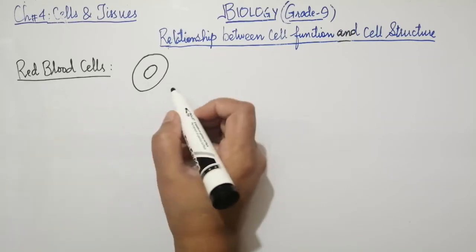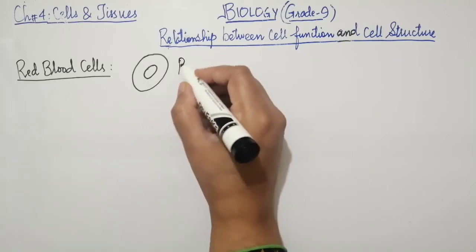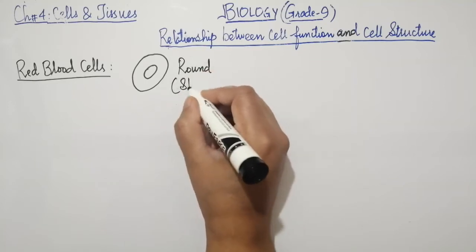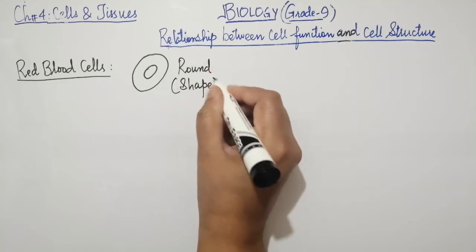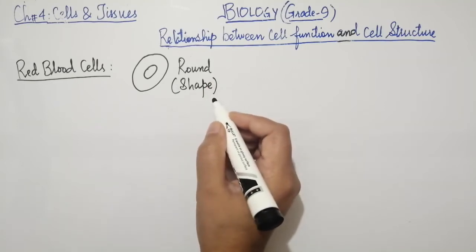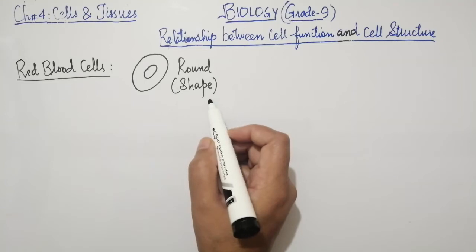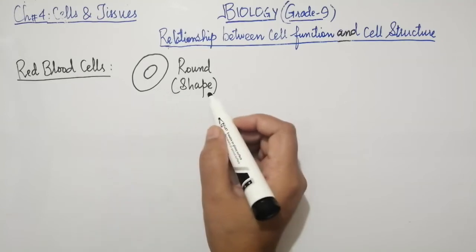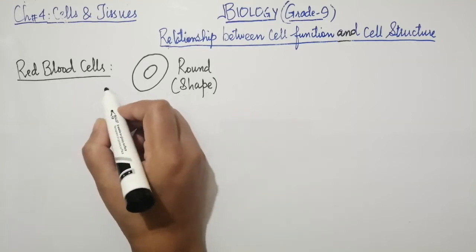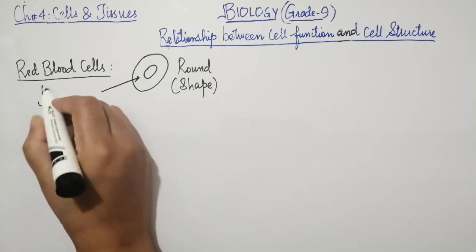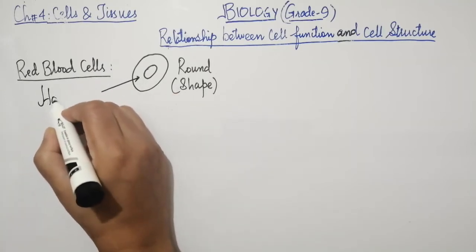Red blood cells' shape is round. Why is it round? We want to know why red blood cells are round - in order to accommodate hemoglobin. This is a red color protein which is called hemoglobin.